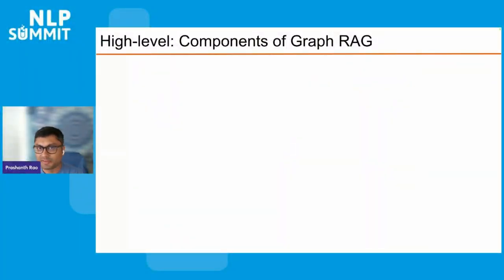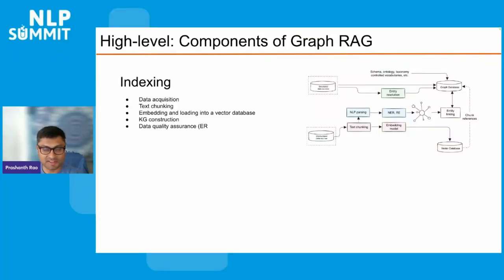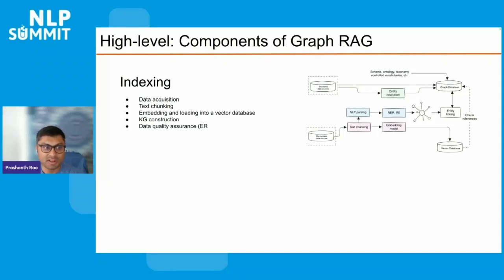Let's go into the high-level components of what is generally referred to as GraphRAG. The first component is the indexing component, and the key point here is that it incorporates both the graph database and the vector database side of things. The main steps involved include data acquisition, how you chunk the data and the text, the embedding stage, loading the data into either the vector or graph database, and the knowledge graph construction phase in which data is extracted as a graph and loaded into a graph database.